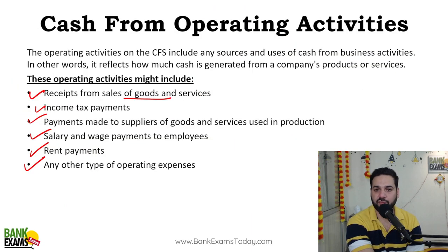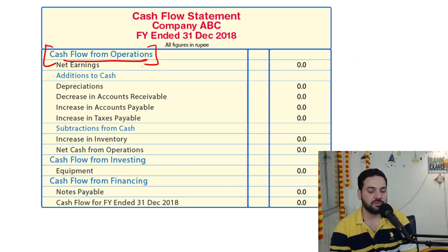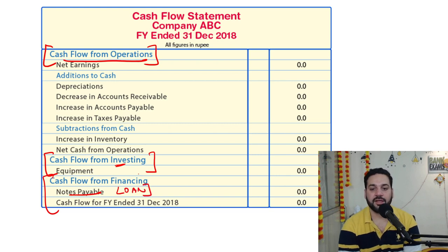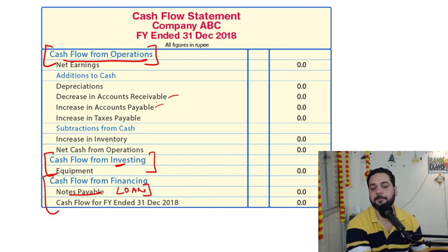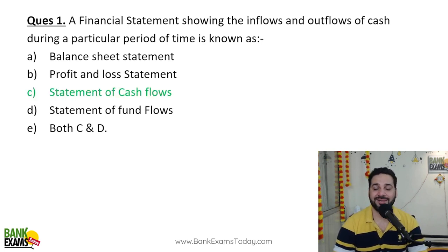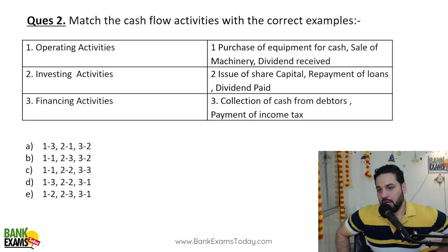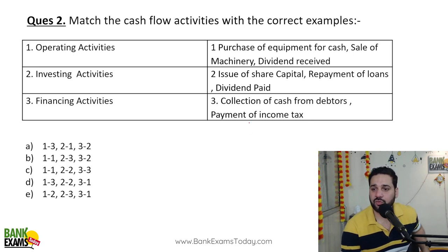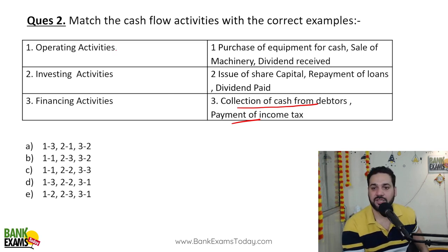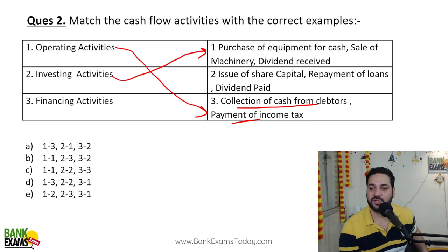Let's do some quizzes. First, just have a look at this normal cash flow statement. You are not supposed to memorize all these lengthy statements, but note that equipment purchasing or selling is investing, notes payable is a loan-type item, and increase in accounts payable is an operational expense. Now match the activities: collection of cash from debtors is a normal day-to-day activity, so it is operating. Purchase of equipment for cash is investing. Sale of machinery with dividend received is also investing.